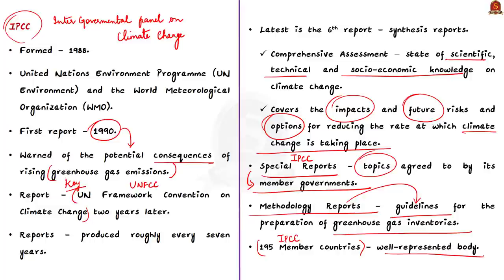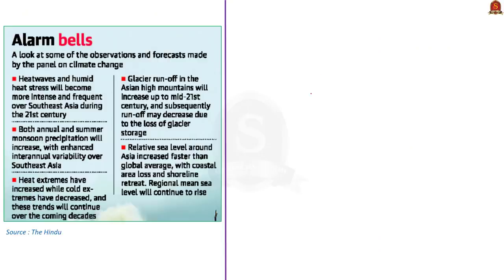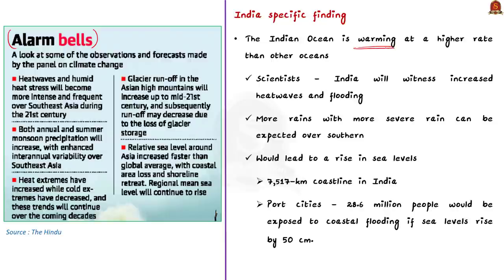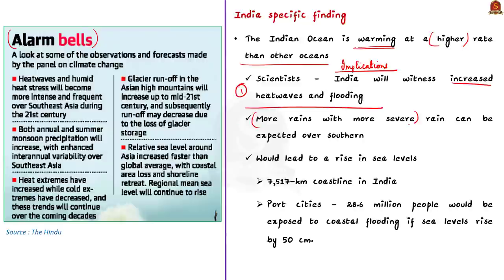The findings of the report have not been pleasant — it has set alarm bells ringing. The first India-specific finding is that the Indian Ocean is warming at a higher rate compared to other oceans. Scientists have warned that India will witness increased heat waves and flooding, with more severe rain expected especially over southern India. More worryingly, these will be irreversible effects of climate change.